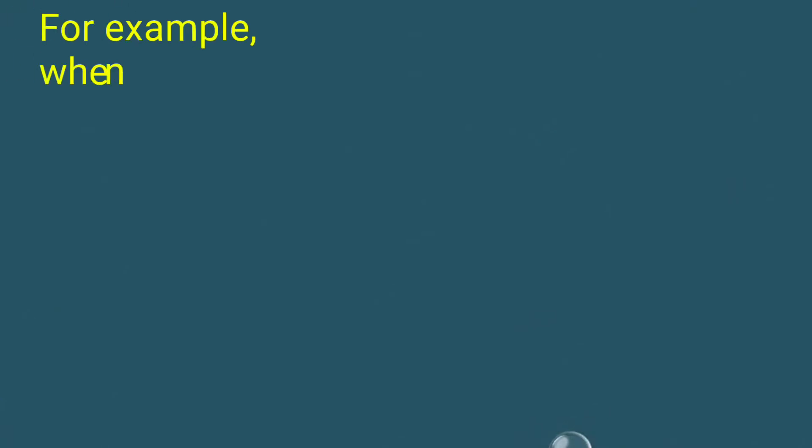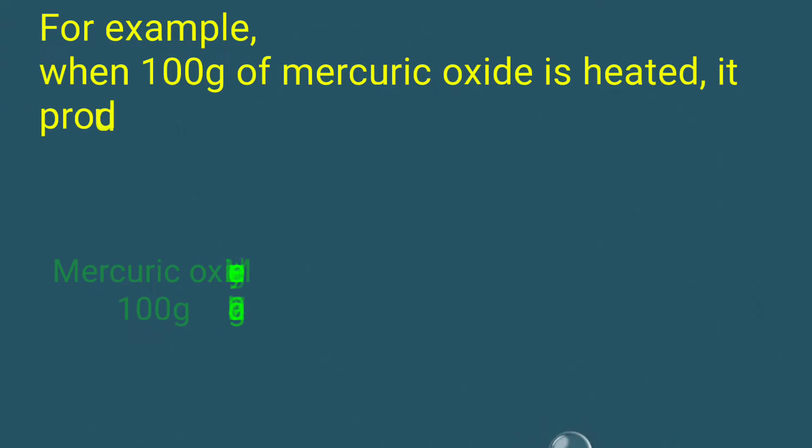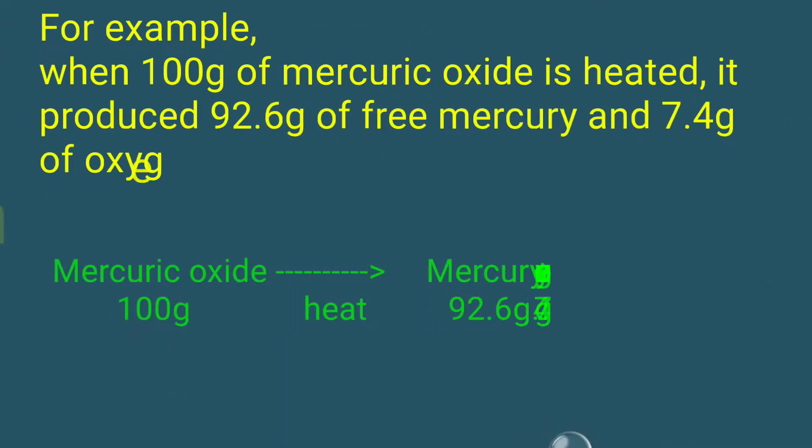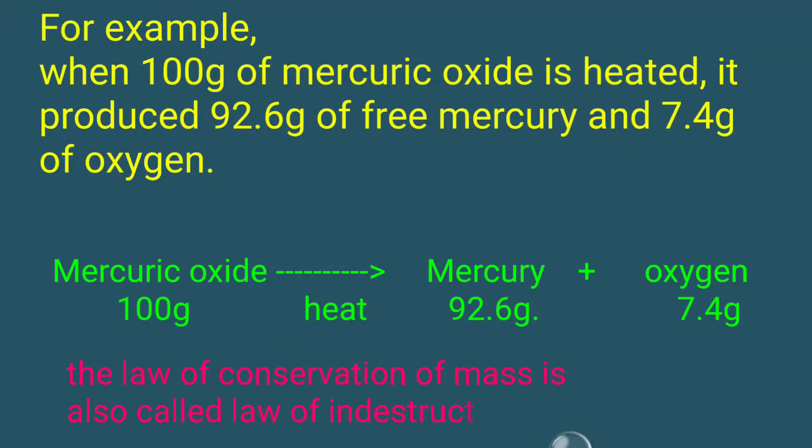For example, when 100 grams of mercury oxide is heated, it produces 92.6 grams of free mercury and 7.4 grams of oxygen. The law of conservation of mass is also called the law of indestructibility of matter.